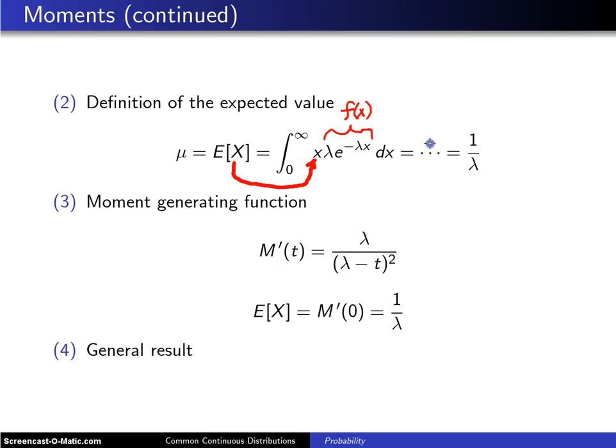The dots here indicate that there's a little bit of work involved. If you look at that integrand, you'll see that you have to do integration by parts. But when you do integration by parts, you wind up with one over lambda as the mean, just as APPL returned.